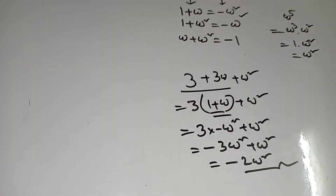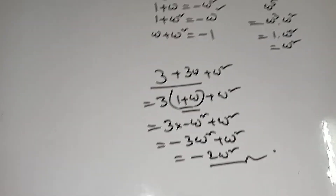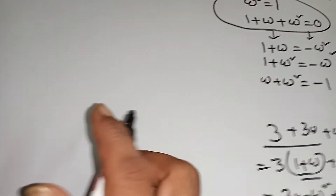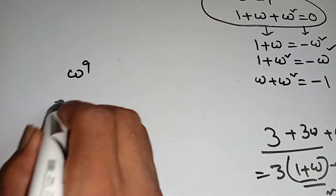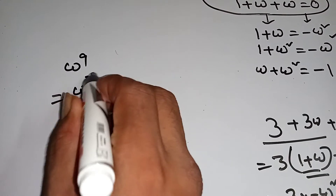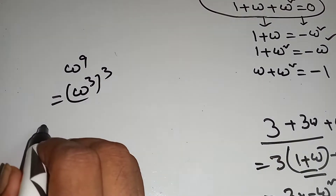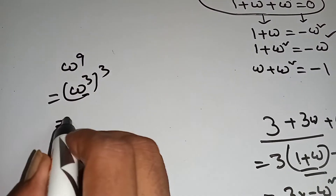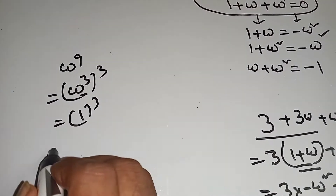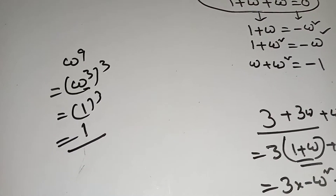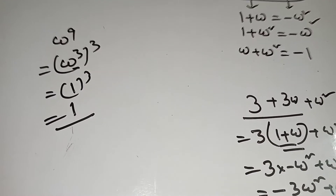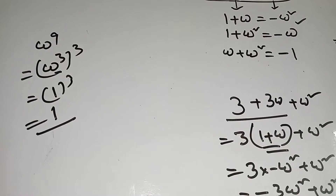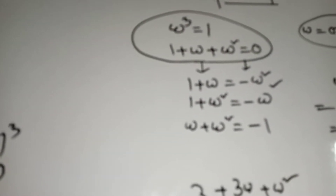That will be minus 3 omega square plus omega square, which equals minus 2 omega square. In this way you can convert any value of omega. For example, given omega to the power 9, you can write it as omega cube whole cube. This is the value 1, so 1 cube equals 1. You must remember: omega cube equal to 1, and 1 plus omega plus omega square equal to 0.